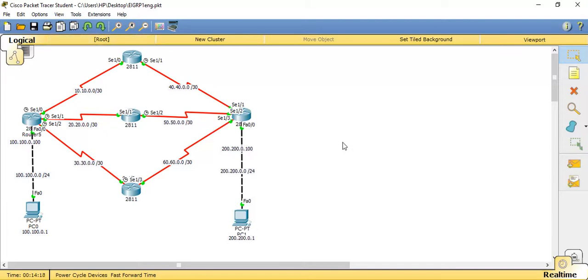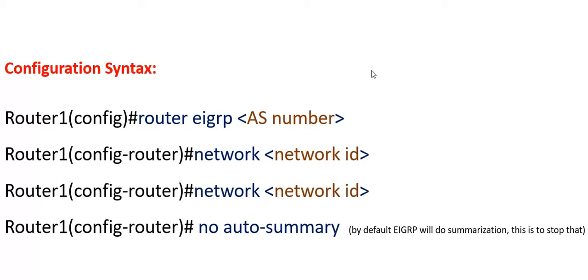Before that we need to know the syntax of the EIGRP configuration. First, we need to get into router configuration mode, then use 'router EIGRP' and specify an autonomous system number. This autonomous system number should be the same for all routers in the network. Once done, EIGRP is enabled and we need to advertise all directly connected networks using the 'network' command. Finally, we can specify 'no auto-summary' because by default EIGRP will do summarization.